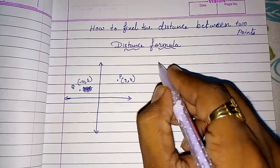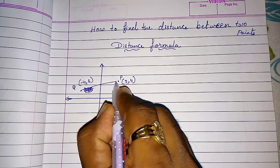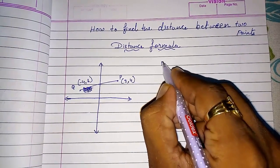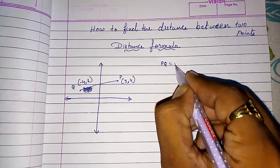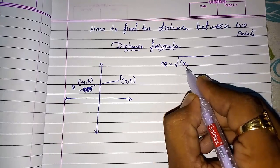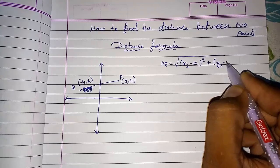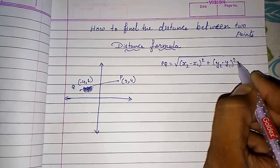So this is the distance formula. Distance of P to Q: PQ = √[(x2-x1)² + (y2-y1)²].